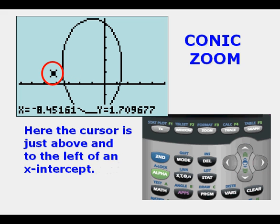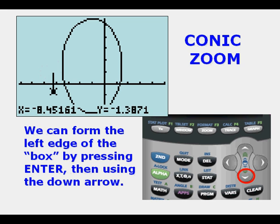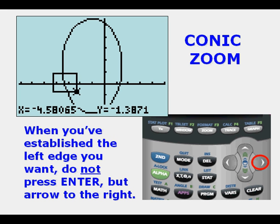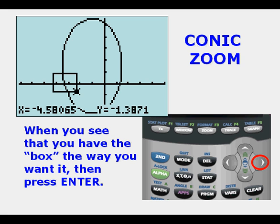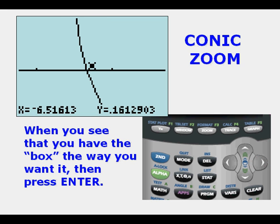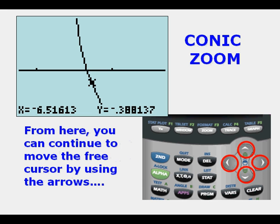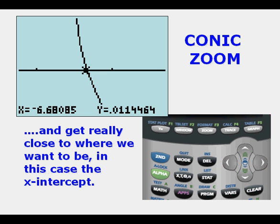It takes you right to that center, which can help you understand what kind of conic you have. From here, you can scroll anywhere using the four arrows. Here, the cursor is just above and to the left of an x-intercept. We can form the left edge of the box by pressing Enter, then using the down arrow. When we establish the left edge we want, we do not press Enter, but arrow to the right. When you see that you have the box the way you want it, then you press Enter. And this is what you get. From here, you can continue to move the free cursor by moving the arrows to get really close to where we want to be, in this case the x-intercept on the left.